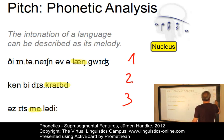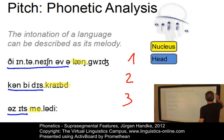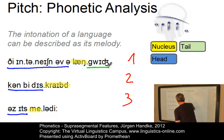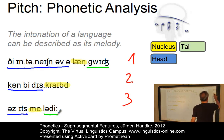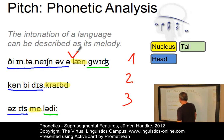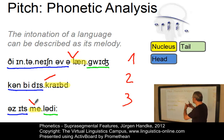The syllables preceding the nucleus are referred to as the head, indicated in blue. The syllables that follow the nucleus are referred to as the tail, indicated in green. The pitch associated with the nucleus is referred to as the nuclear tone. The tone in the first example — 'The intonation of a language' — is possibly a fall-rise, while 'It can be described as its melody' is a falling tone. This then is a phonetic analysis of intonation.